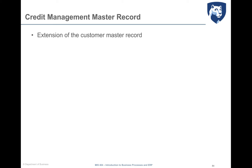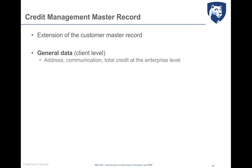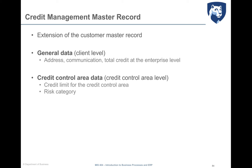Finally, the last key master data object of the fulfillment process is the credit management master record. It is an extension of the customer master record that includes relevant data for managing credit to the customer. The work of the credit control area is realized through the information included in this record. The data are grouped into three segments: general data, credit control area data, and an overview. The general data segment includes data applicable at the client level — across multiple credit control areas — such as address, communication data, and total credit granted to the customer across the enterprise. The credit control area segment includes data applicable to a single credit control area, such as the credit granted for companies in a particular credit control area and risk category.